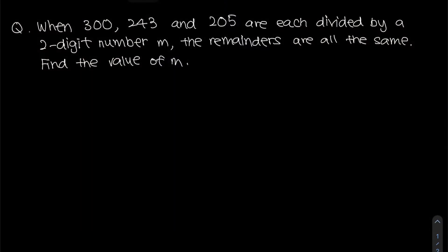Right now, we are going to solve this question together. Let's read the question together. When 300, 243 and 205 are each divided by a two-digit number m, the remainders are all the same.